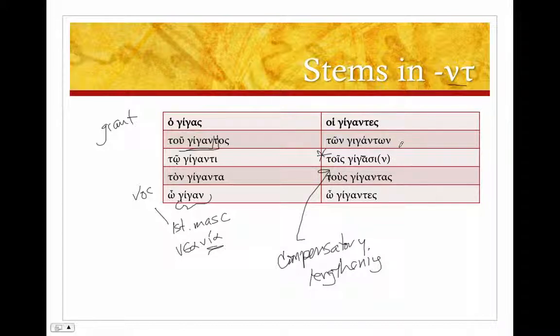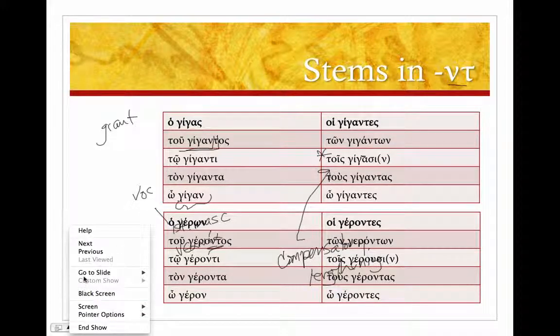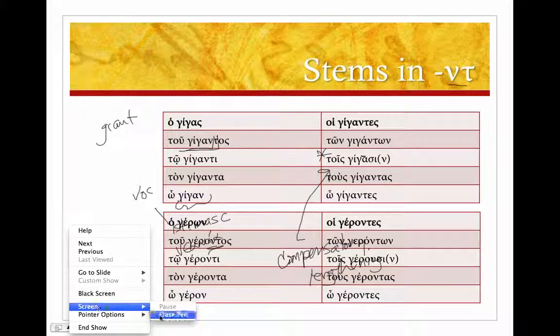Let's take a look at one other one. Because nu tau, here we have alpha nu tau. Let's erase our writing here and take a look at one other noun.